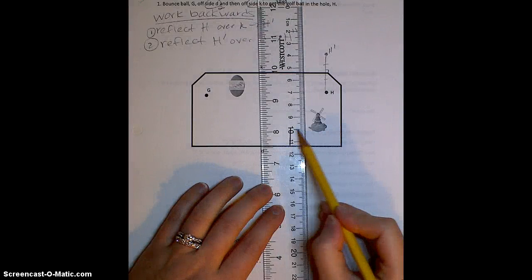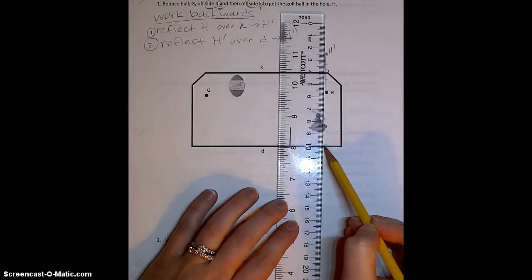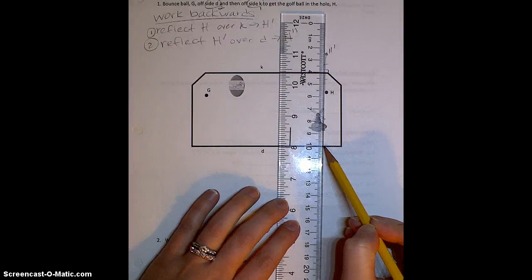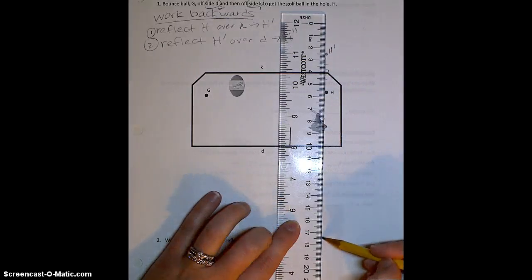So I'm going to again take my 10 mark, line that up nicely with the line D, or wall D. And I'm going to see that that is 1, 2, 3, 4, 5, 6, 7.5 centimeters away. So I'm going to go 7.5 centimeters away down here.